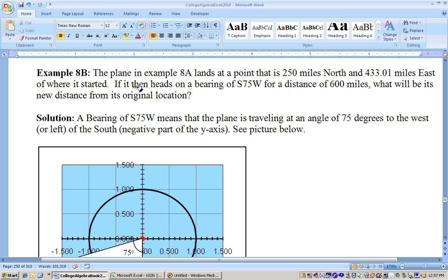Now, in this problem, it's a continuation of 8A. And it says, in example 8A, the plane lands at 250 miles north, 433.01 miles east of where it started. If it then heads on a bearing of south-75 west for a distance of 600 miles, what will be its new distance from its original location?